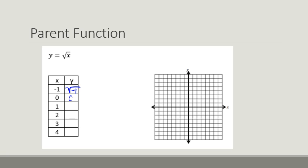If we put in 0, we're going to get 0. The square root of 1 is 1. The square root of 2 is 1 point something. The square root of 3 is 1 point something, and the square root of 4 is 2.